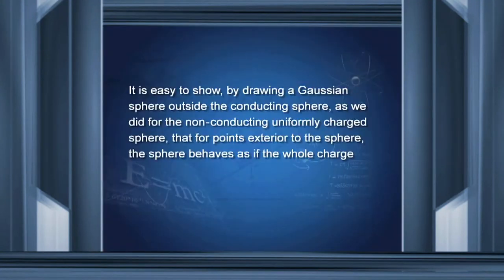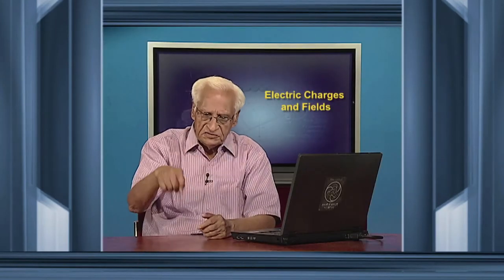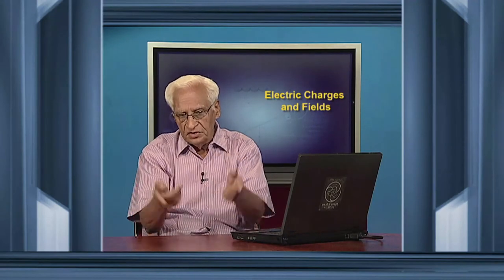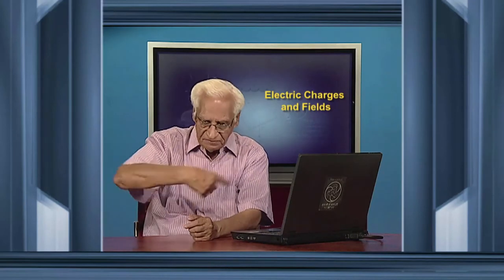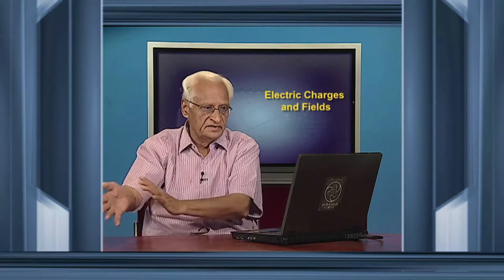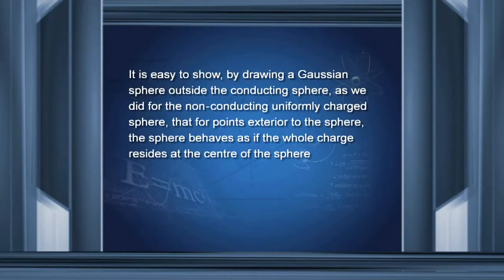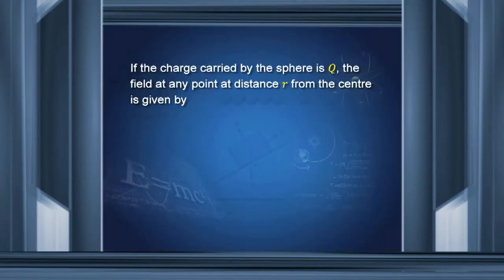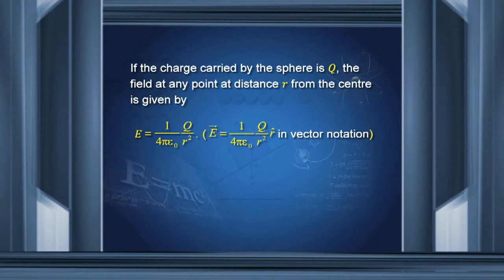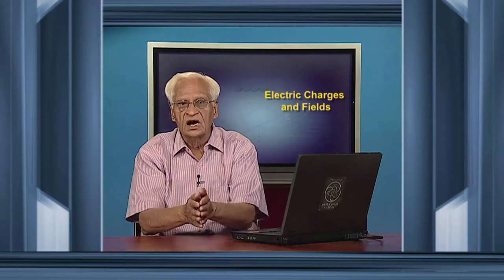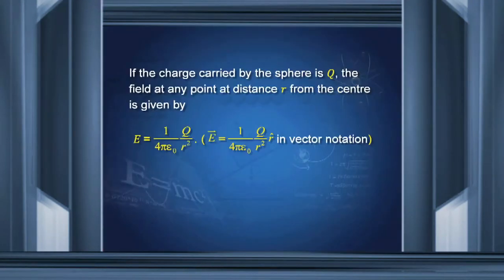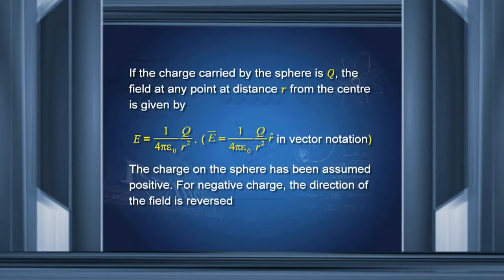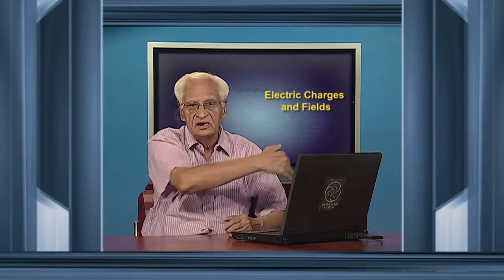The constant value of the potential must be the same as at the surface for continuity; otherwise an unwanted electric field will create problems. By drawing a Gaussian sphere outside the conducting sphere, for points exterior to the sphere, the sphere behaves as if the whole charge resides at the center. If the charge carried by the sphere is q, the field at any point is given by q/4πε₀r². The charge has been assumed positive, giving the field pointing radially outward.